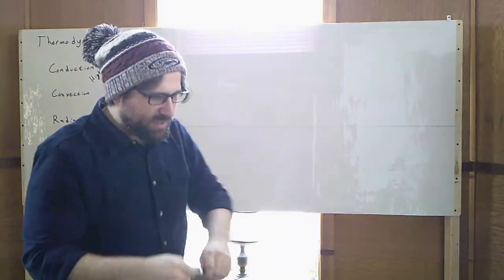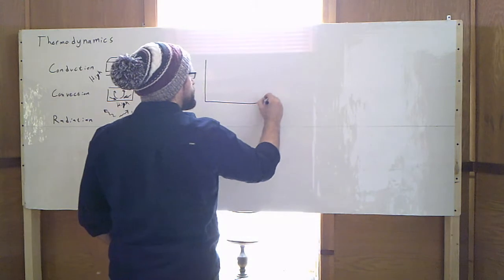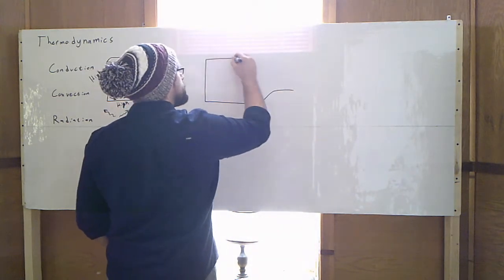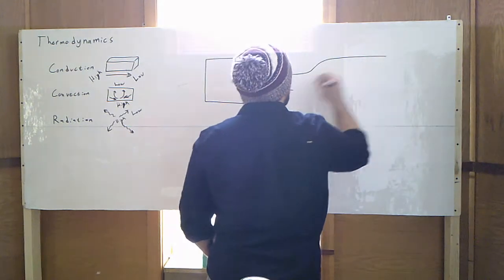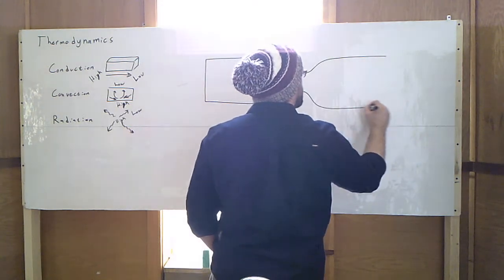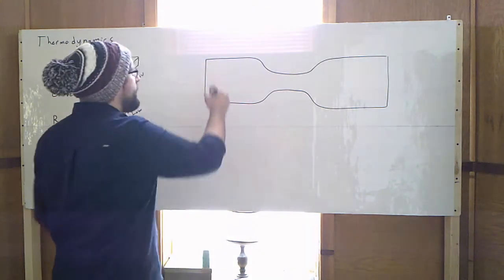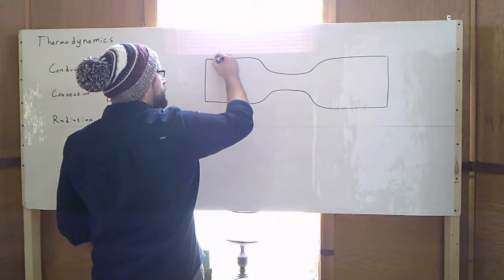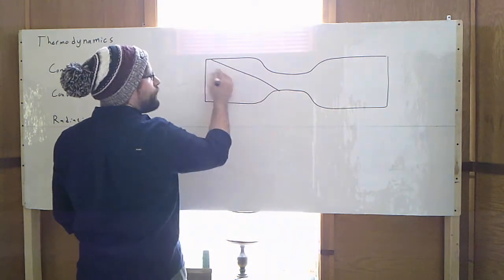So when I tip that jar sideways, let's just draw it like this. When I first tip it over, I'm going to have water. The water is going to look kind of like this. This is my water level right here.